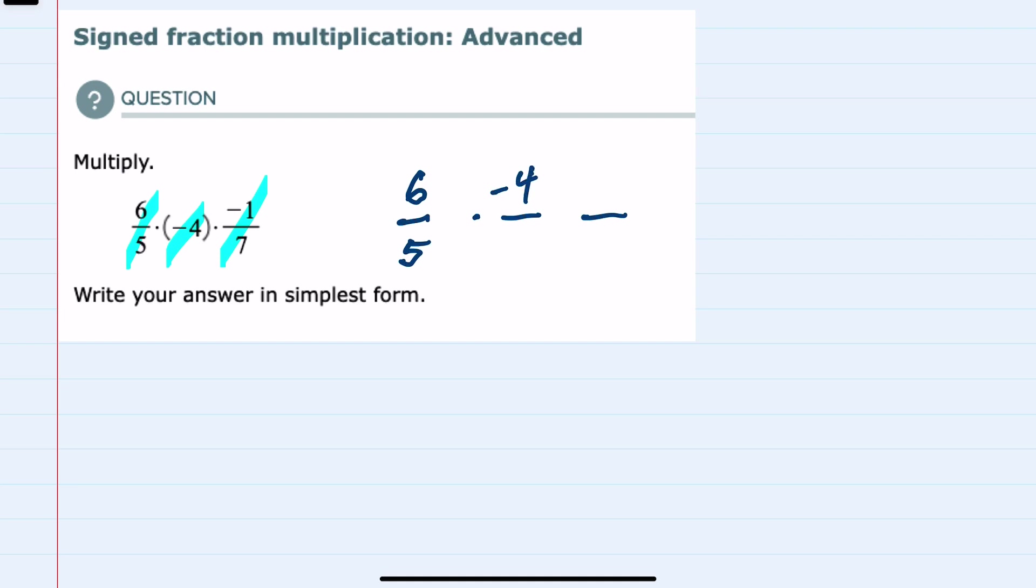go in the numerator. And since the negative 4 doesn't have a denominator, I can write any number as being over 1, and now that I've written it as three fractions,